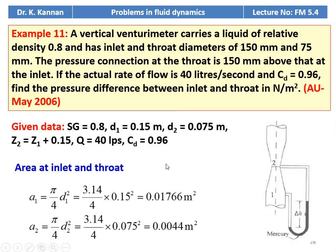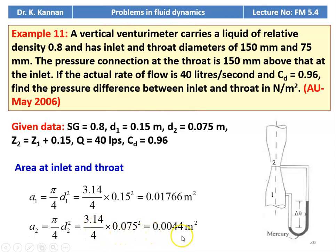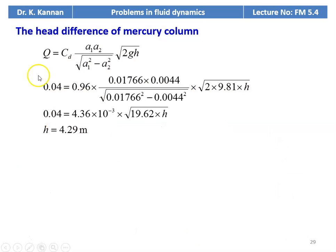We calculate the area at the inlet and throat section. A1 equals π/4 × D1² = 3.14 ÷ 4 × 0.15² = 0.01766 meter square. A2 equals π/4 × 0.075² = 0.0044 meter square. The discharge equation is: Q equals CD × (A1 × A2) ÷ √(A1² − A2²) × √(2GH).